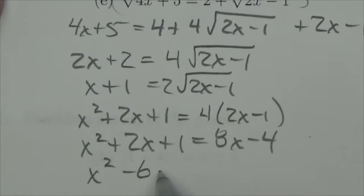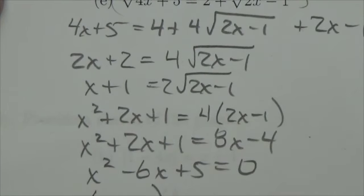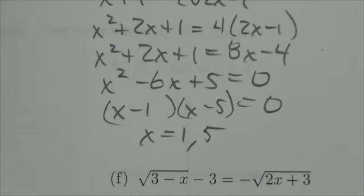So x squared minus 6x plus 5 is equal to 0, and that actually factors quite nicely as x minus 1, x minus 5, so my answers here are possibly 1 and 5.